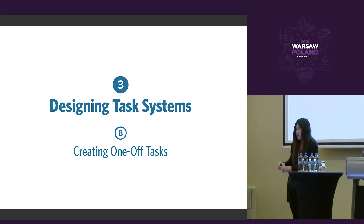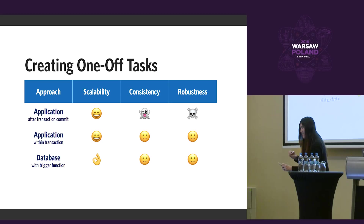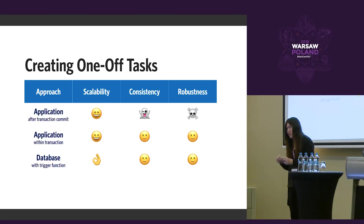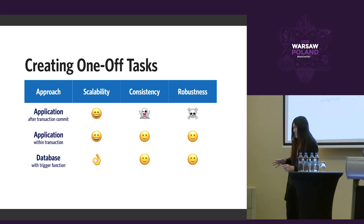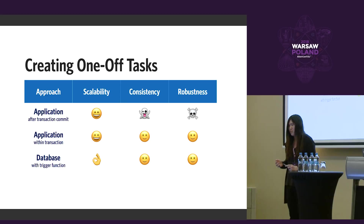Now let's talk about creating one-off tasks — this is where code shows up. There are three ways to make one-off tasks. You can make it from the application in a separate transaction, assuming you use a jobs table, Redis, or another data store. This is scalable because it doesn't impact your main database, but it's probably not consistent or robust, because now you have two systems of record: one for data and one for jobs.